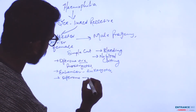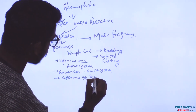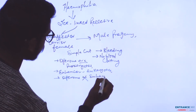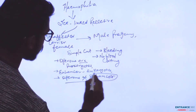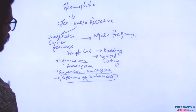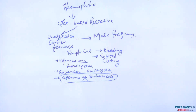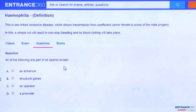Enhancer sequences are not part of an operon. So the conclusion is: operons are not part of enhancer sequences. As we have understood the concept, we will now proceed to the question and look for the correct option. In the solution, operons are not part of enhancer sequences.